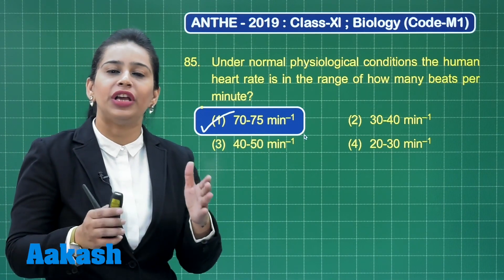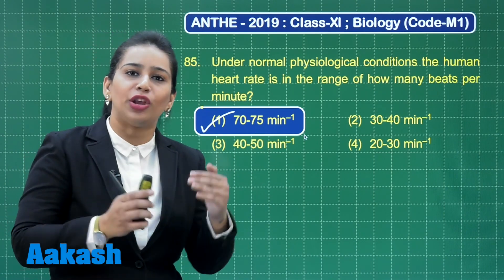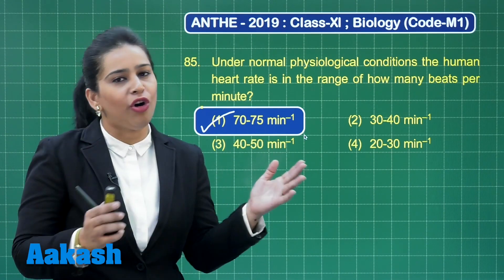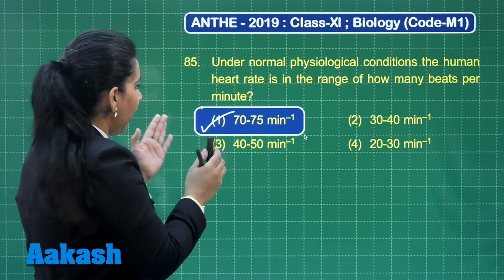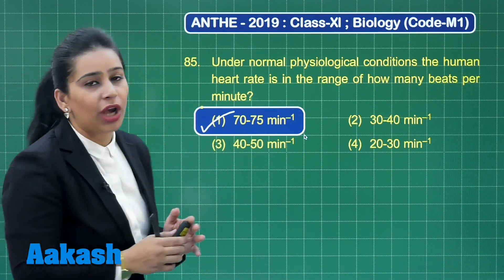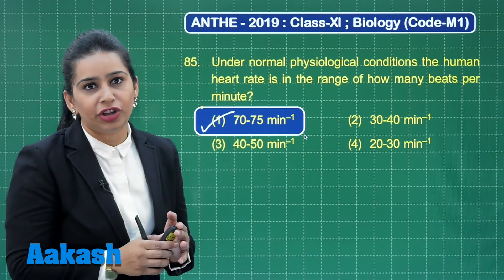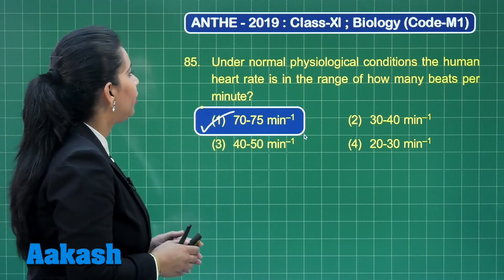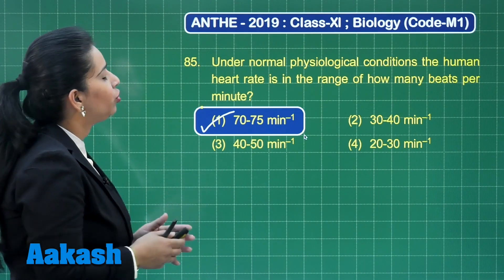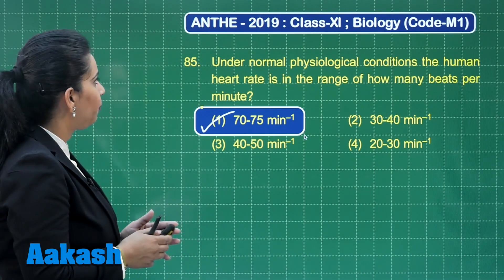Normally we have inhibitory regulation from the parasympathetic neural system, and the average heartbeat is 72 per minute. Now, moving to the next question.